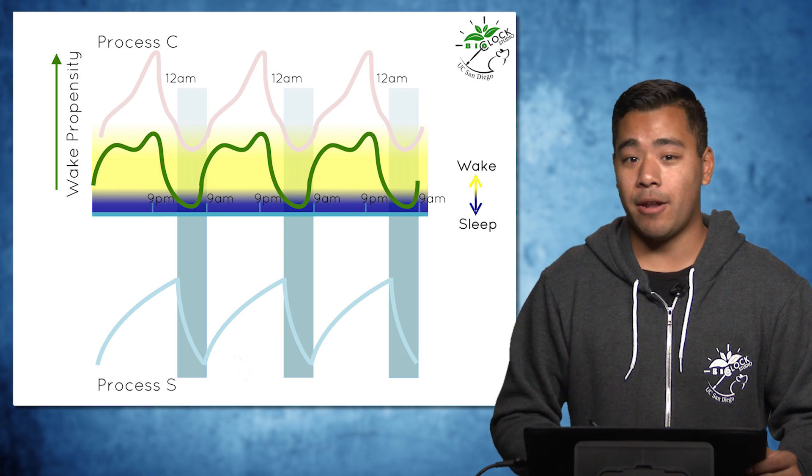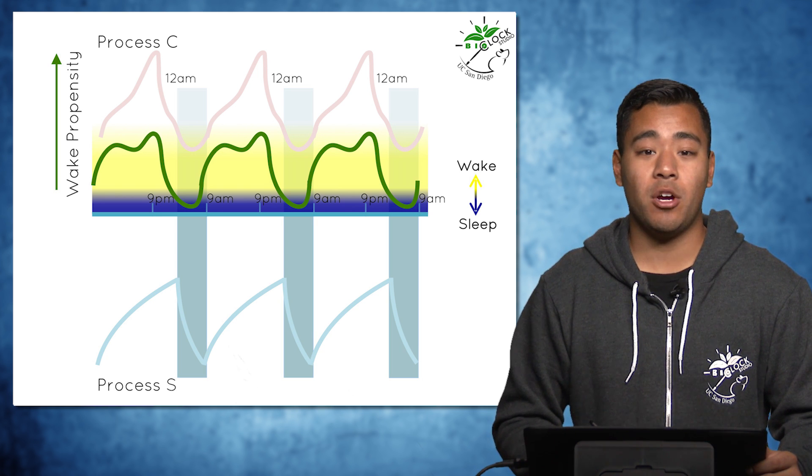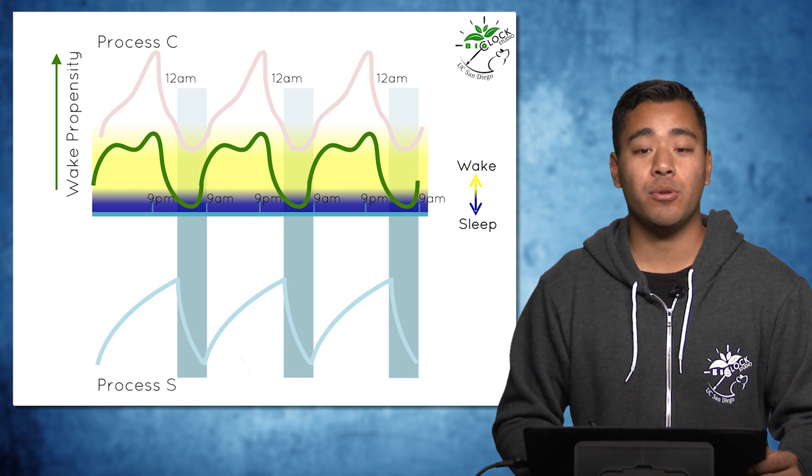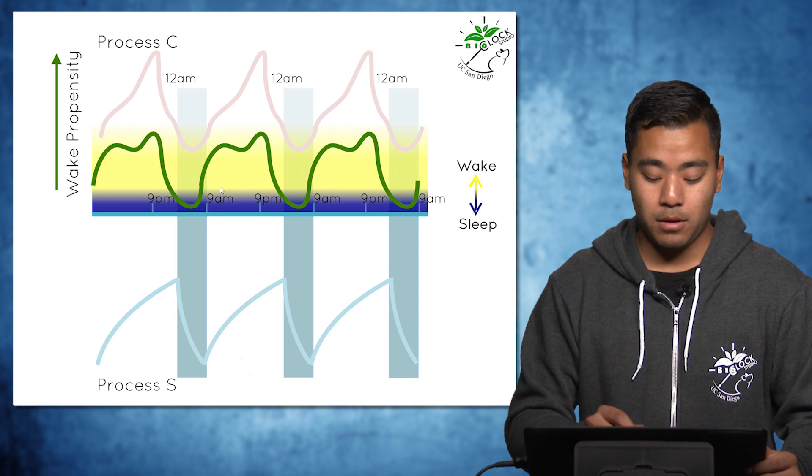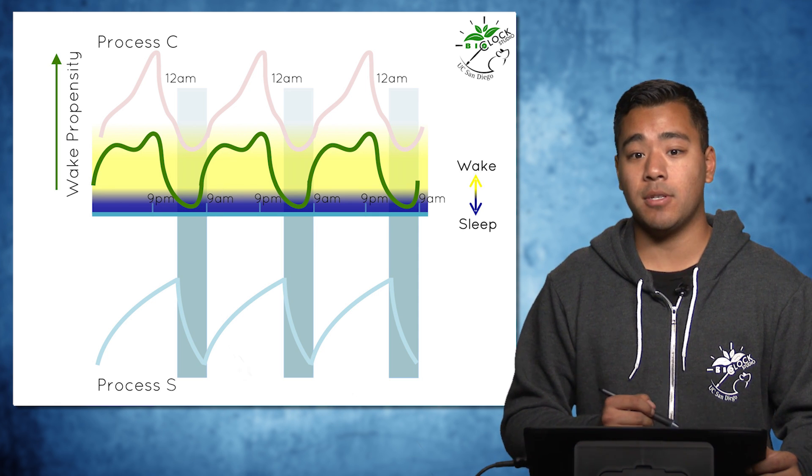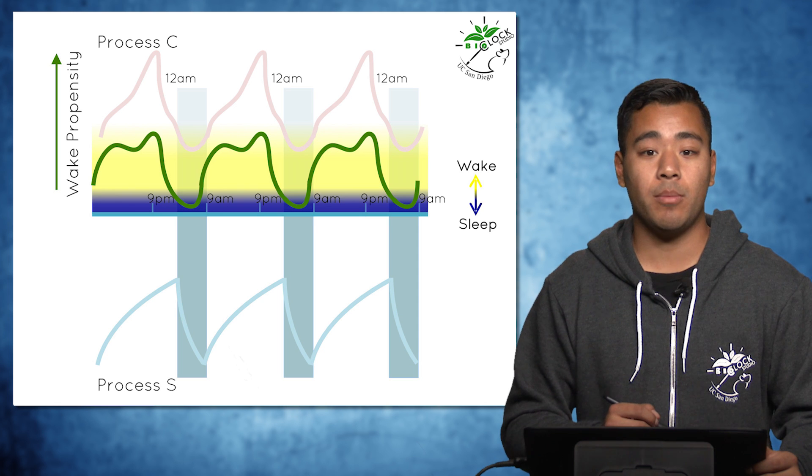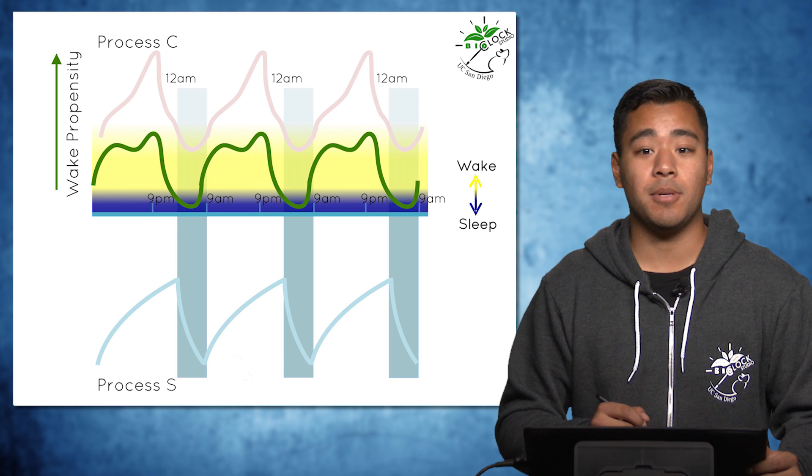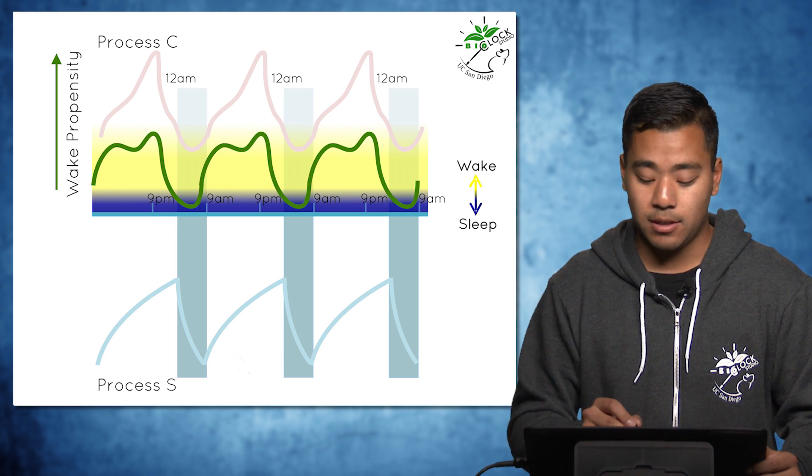This person follows a normal pattern, sleeping in the first part of the night because homeostatic sleep pressure is high, and staying asleep in the second part of the night due to a low circadian alerting signal. Conversely, during the day the person is awake in the morning because there is low homeostatic sleep pressure, and staying awake later in the day even though sleep pressure has built up because the circadian alerting signal is also high.